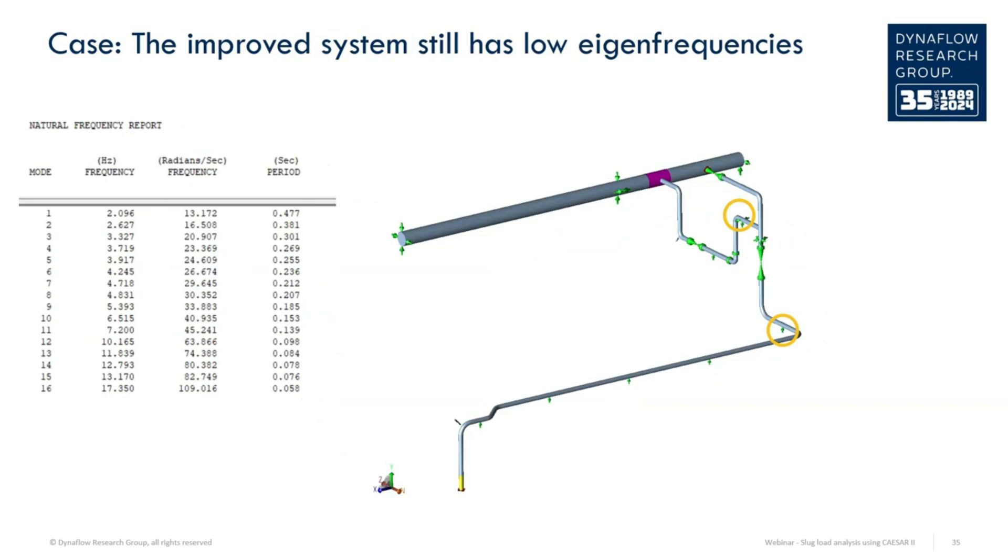If we have a look at the system that was improved in the static analysis to be able to handle the slug loads, we see very similar low minimum eigenfrequencies. This already signals that when a dynamic analysis of the slug loads is done, it might fail. These low eigenmodes are mainly present in the long horizontal segment that is only supported by rest supports, but also near the horizontal valve.